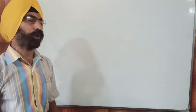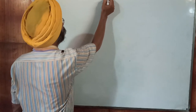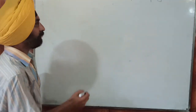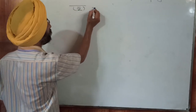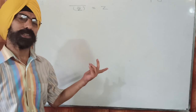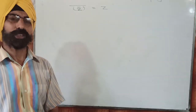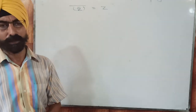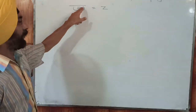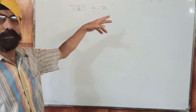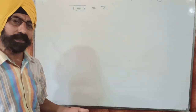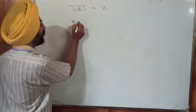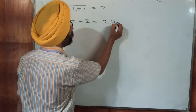Now we will move on to the properties of conjugate of a complex number. The first property is that the conjugate of a conjugate is the original complex number — Z bar bar equals Z. If you change the sign of the imaginary part twice, you get back the original number. The second property is that Z plus Z bar equals two times the real part of Z.